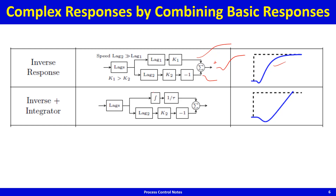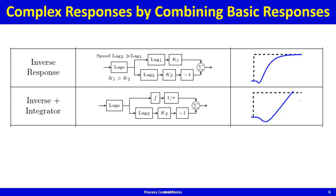If in one of the parallel lines you have an integrator instead of a lag, then the integrator keeps going up while the other element goes down. When you add these two, you get a response that rises and then curves over. You can get very nice complex shapes by combining basic response types.